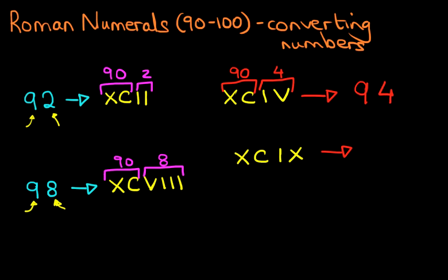Now again, we start on the left. We've got an X and we've got a C after it. So these two are together. That means 10 before the 100. So therefore it is 90.